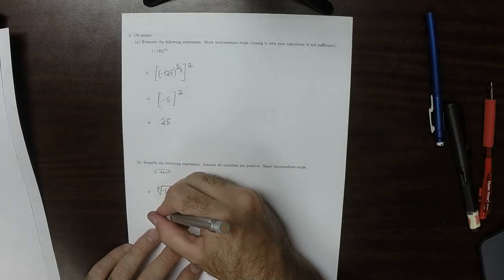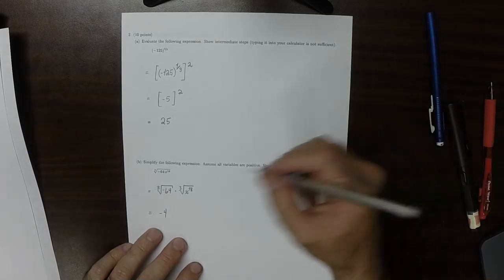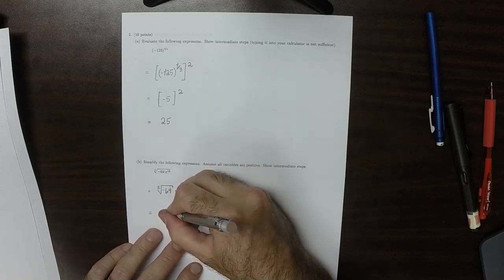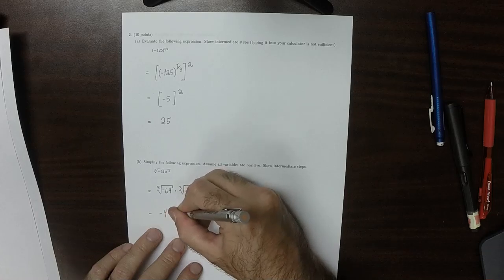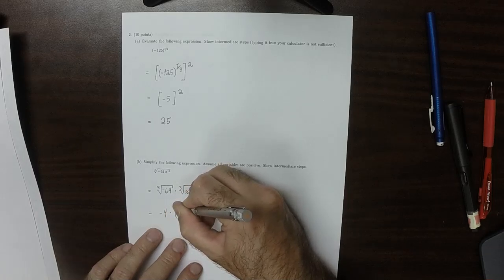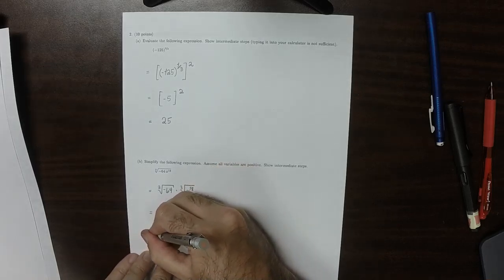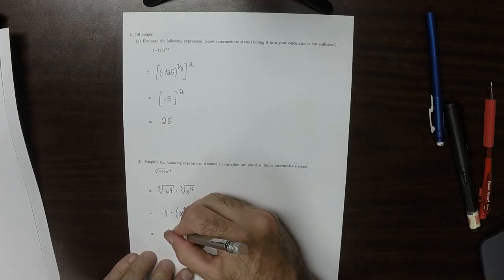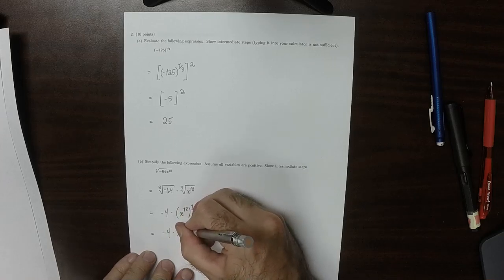The cube root of negative 64, that's negative 4. And then the cube root of x to 18. Well, cube root is equivalent to fractional exponent 1 third. So you could think of it like x to 18 to 1 third. And then this 1 third could come in. So that would be x to 18 times 1 third is 6.